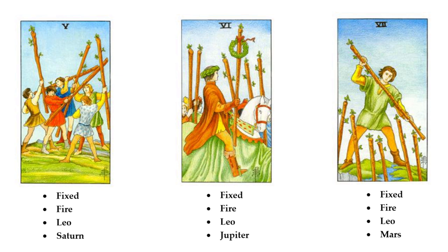When you understand how a combination of fixed fire, Leo, and Mars play off each other, the level of understanding of the Seven of Wands as a card of challenge, competition, defiance, and defensiveness deepens significantly. All of the fixed signs — Leo, Scorpio, Aquarius, and Taurus — are just that: fixed and focused. In the case of the Six of Wands, Jupiter strengthens this; with the Five of Wands, Saturn closes it in — restricting, rigid, and stubborn. And then for the Seven, Mars brings the fight and the energy of defending what you believe in.